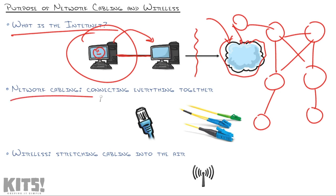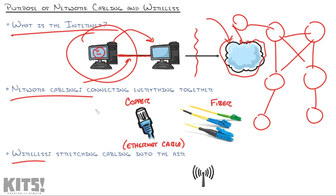In order to get our new office suite connected and join ourselves to this big cloud, we have to use some network cabling. This is what I refer to as the old way of connecting, but it's actually the better way of connecting. Network cabling should be used anywhere and everywhere that you can — it's way more reliable and most of the time way faster than a wireless connection. There are two kinds of network cable you can use: copper, which most people call Ethernet cable, and fiber.